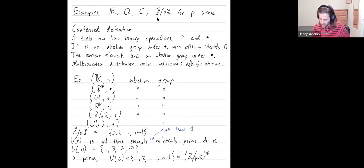So when you're trying to build a field, you need a single set that's an abelian group under addition, and then you can only remove zero, and you need to get an abelian group under multiplication.